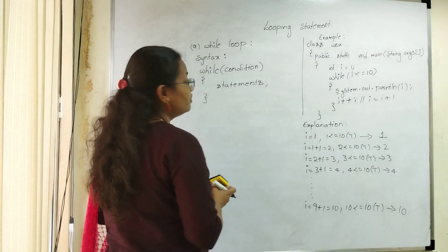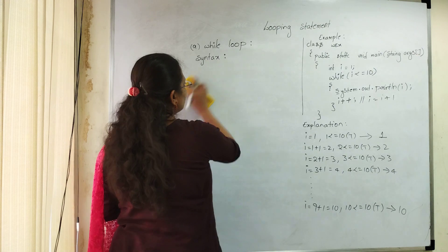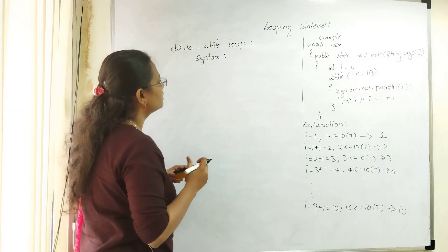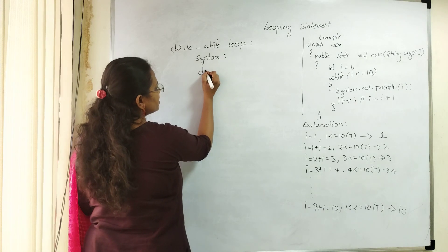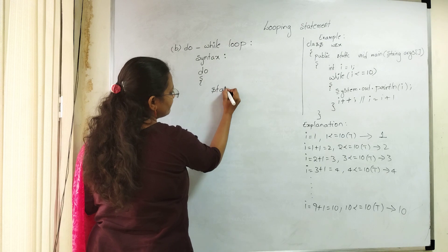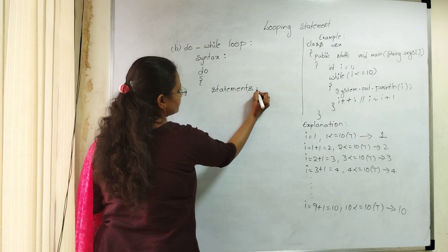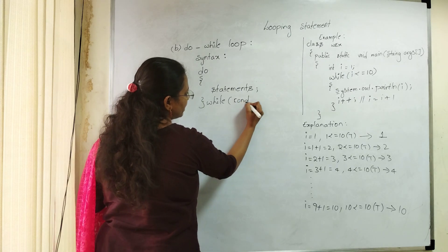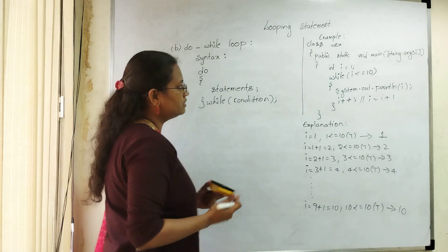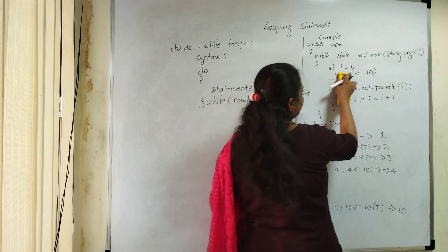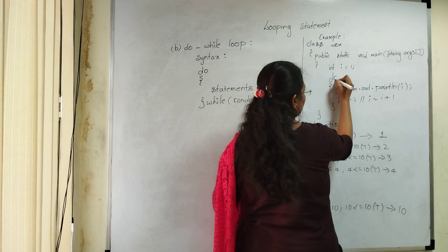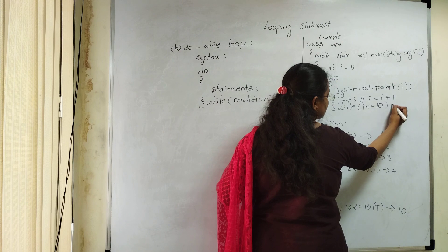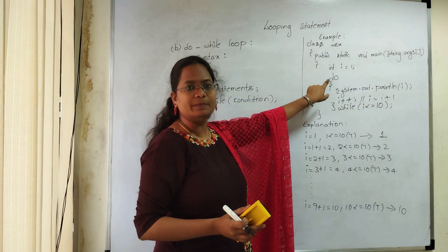Now we can see how to work with do-while loop. The syntax: first write 'do', then write down the statements, then write the while condition — while(condition). It is the same program but with small changes: instead of while at the top, write 'do' at the start, then write while(i <= 10) at the end.